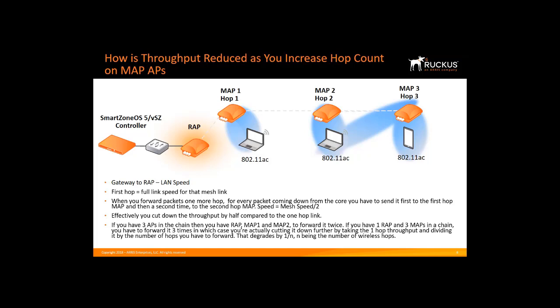For example, if we have 600 Mbps between the controller and root AP, and between the root AP and MAP one we have 300 Mbps, then between the root AP and MAP two our speed would be approximately 150 Mbps, and between the root AP and MAP three the approximate speed would be about 100 Mbps.